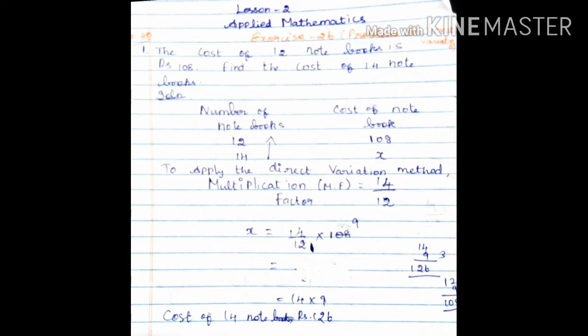First write solution. Two quantities: notebooks and cost — number of notebooks and cost of notebooks. So number of notebooks 12, cost is Rs. 108. And then 14 notebooks, cost is x. This is a direct variation method.